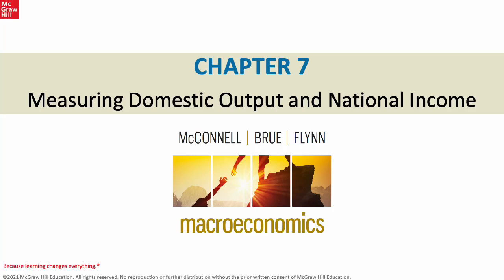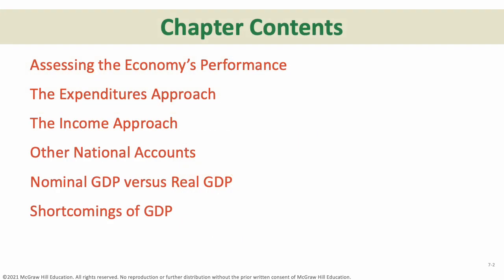Hello everybody, and welcome to chapter 7. In this chapter we're going to measure how we can gauge the overall size of an economy, its output, and what we call national income. We're going to use a metric known as GDP, or gross domestic product, to assess an economy's performance.